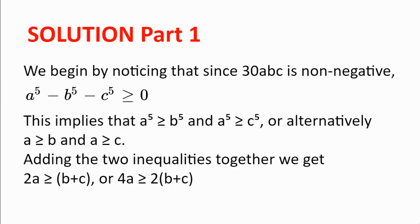Solution. We will begin by noticing that since 30abc is non-negative, a to the power of 5 minus b to the power of 5 minus c to the power of 5 is also non-negative, so greater or equal to 0, since 30abc is equal to a⁵ - b⁵ - c⁵. This implies that a⁵ is greater or equal to b⁵, and a⁵ is greater or equal to c⁵, or alternatively a is greater or equal to b, and a is greater or equal to c.